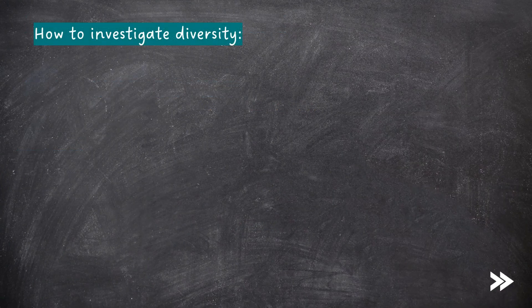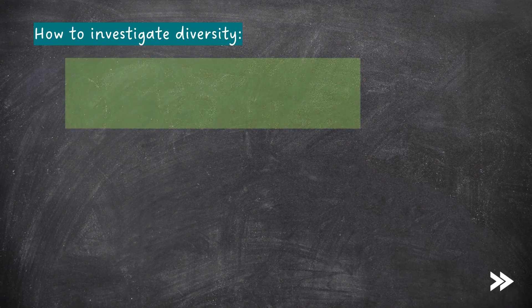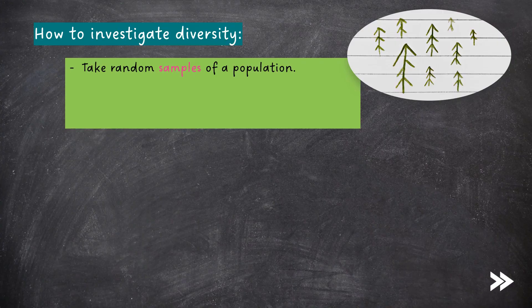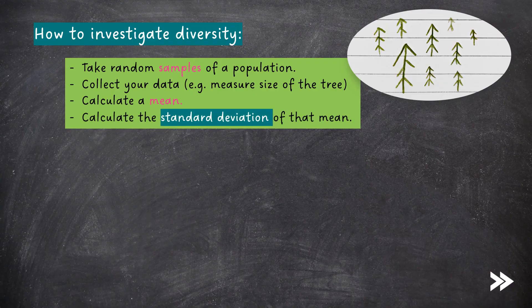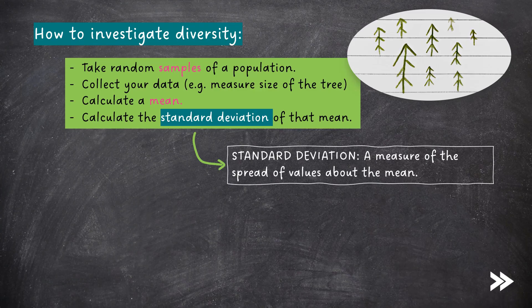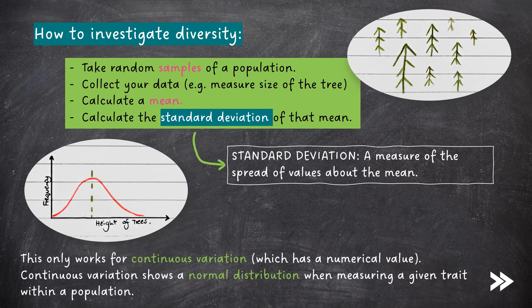Finally, we need to know how to investigate diversity. An exam question you might be given would be: how would you investigate diversity of a certain trait within a certain species? You would state that first you would take random samples within the population. Then you would collect your data — for example, measure the height of trees in the population — and then calculate the mean. Finally, you would calculate a standard deviation of that mean. Note that the standard deviation is a measure of the spread of values about the mean. This only works for continuous variation, which has a numerical value. Continuous variation shows a normal distribution when measuring a given trait within a population.